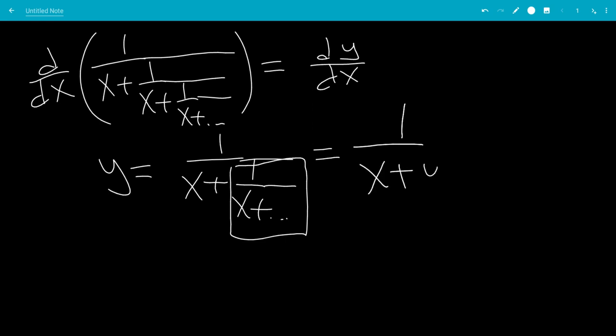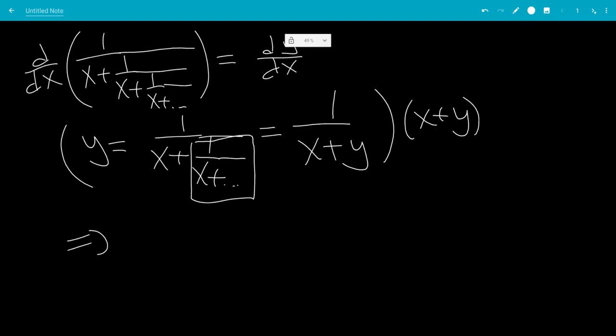so this is 1 over x plus y. So now we can multiply both sides by x plus y. That'll leave us with y times x, which is xy, plus y times y, which is y squared. x plus y over x plus y is 1 because it cancels.